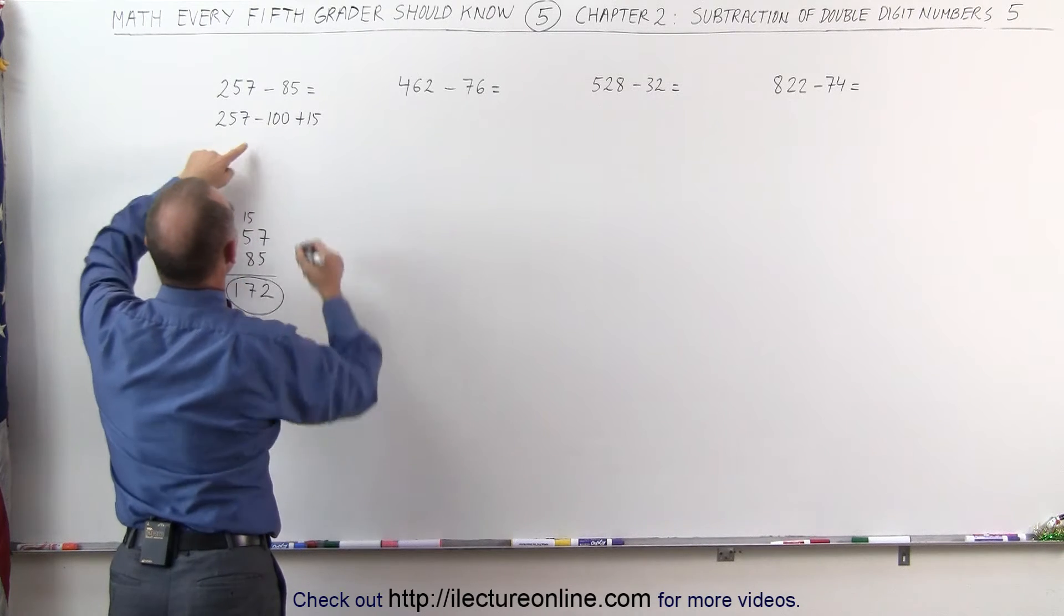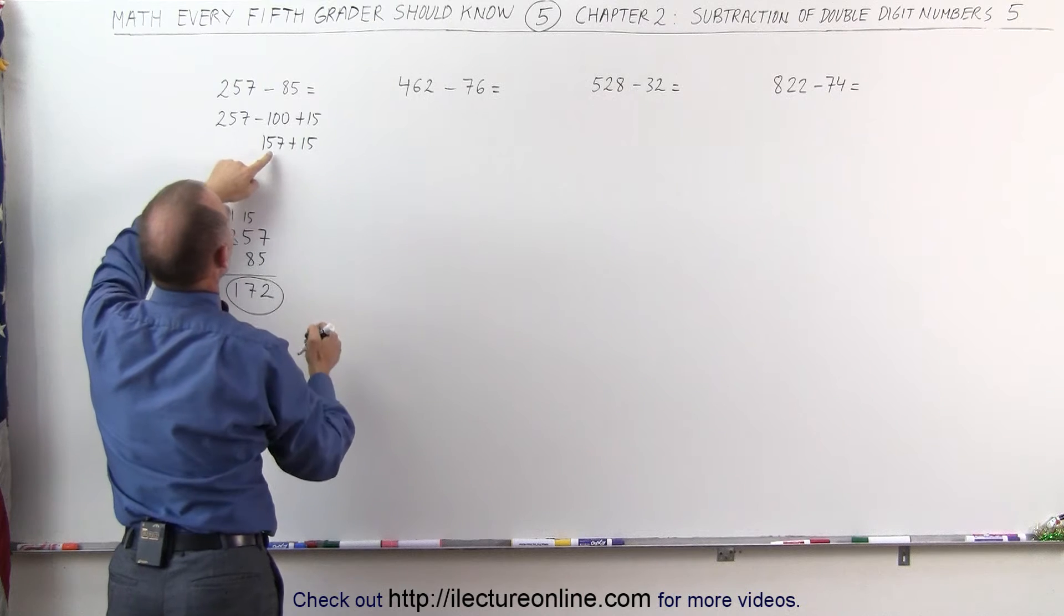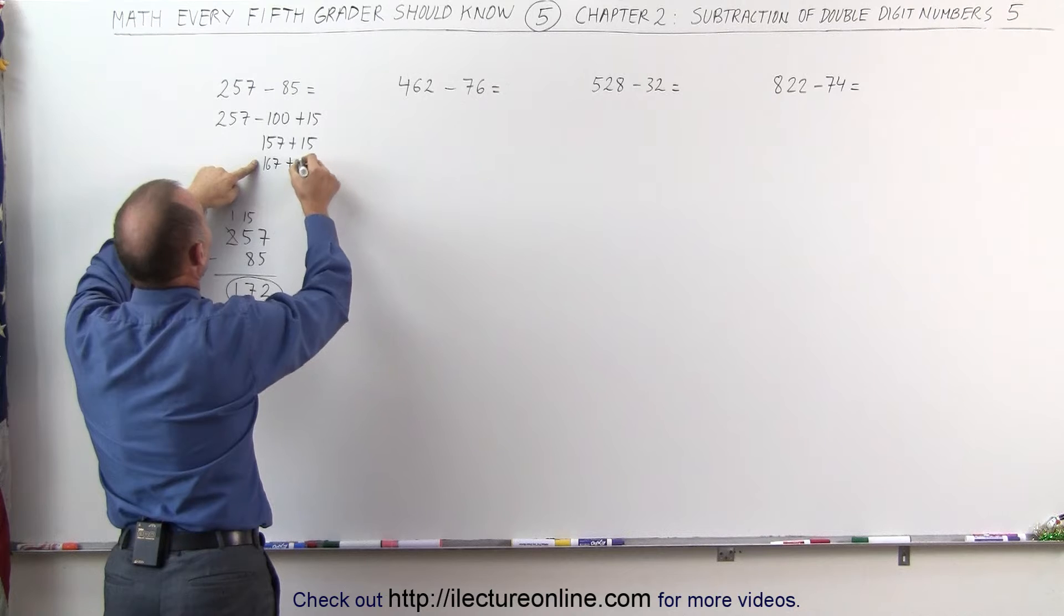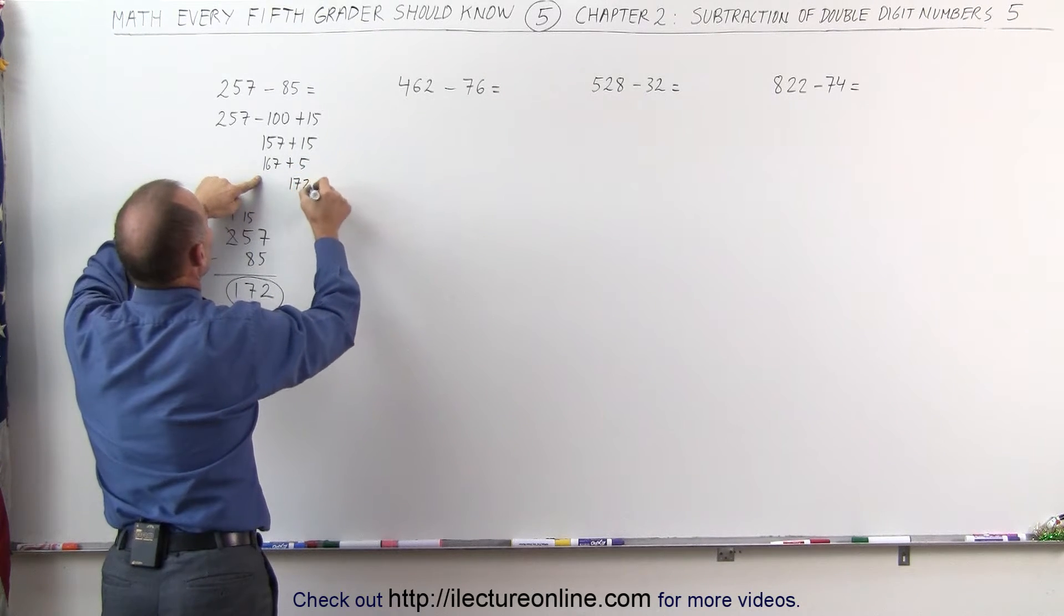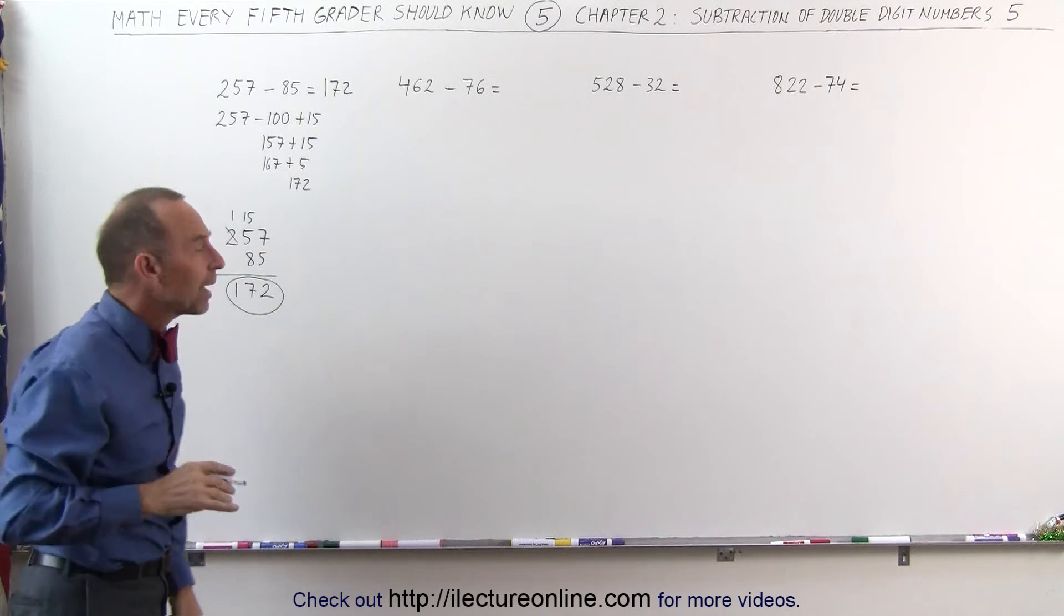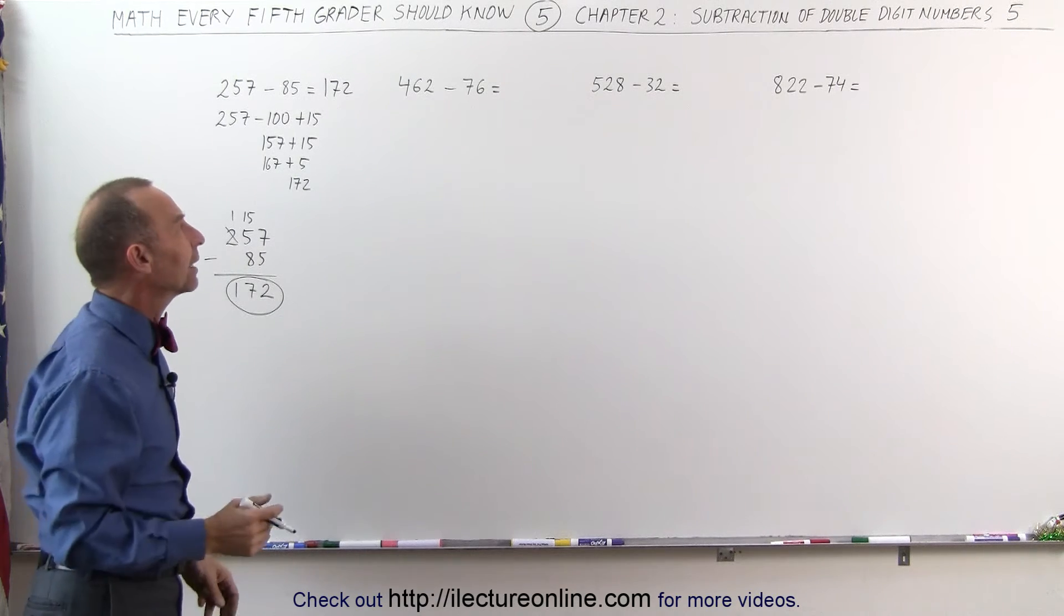257 minus 100 that gives me 157 plus 15. Well 157 plus 10 gives me 167, that's 167 plus 5. 5 plus 7 is 12, that becomes 172 and that is my answer. So that's how I work this problem out in my head. I simply subtract more from it and then I add the difference back later.